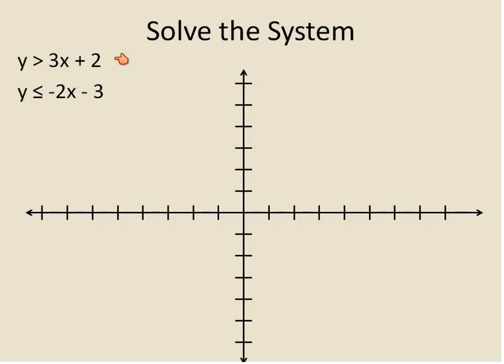So first off, we're going to graph y is greater than 3x plus 2. We know that the point 2 is our y-intercept, because this is in slope-intercept form. Our slope is 3. That means we go up 3 and over 1. Our rise is 3, our run is 1. So that's where the line y equals 3x plus 2 would go.